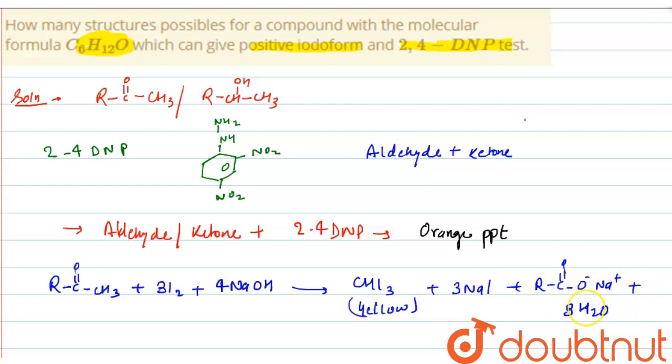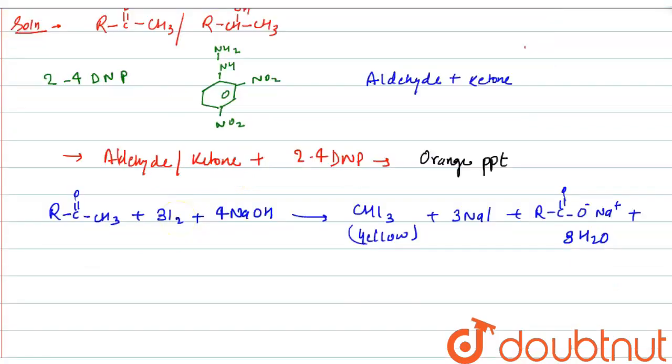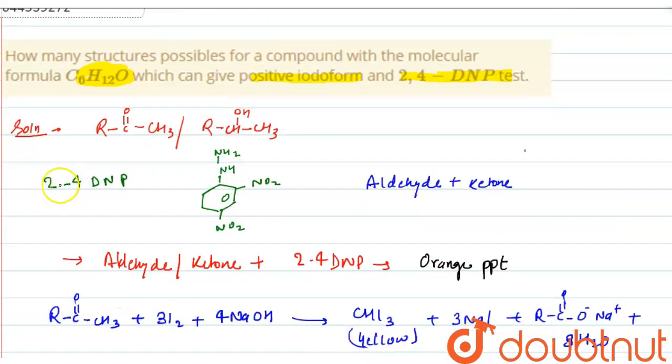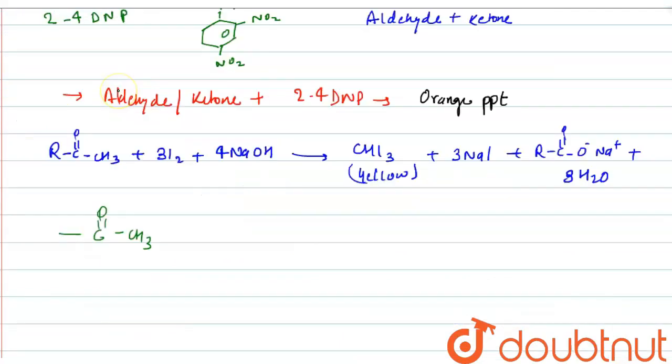So from this conclusion, we can conclude that the compound is a ketone and it must contain this structure. So we have to make a compound with molecular formula C6H12O having this structure. So let's draw it.